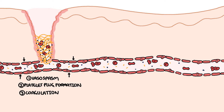The final product of all of this is a fibrin mesh. In addition to achieving hemostasis, the fibrin mesh serves as scaffolding for the migration into the wound of inflammatory cells, such as polymorphic leukocytes, which are your neutrophils, and monocytes or macrophages.